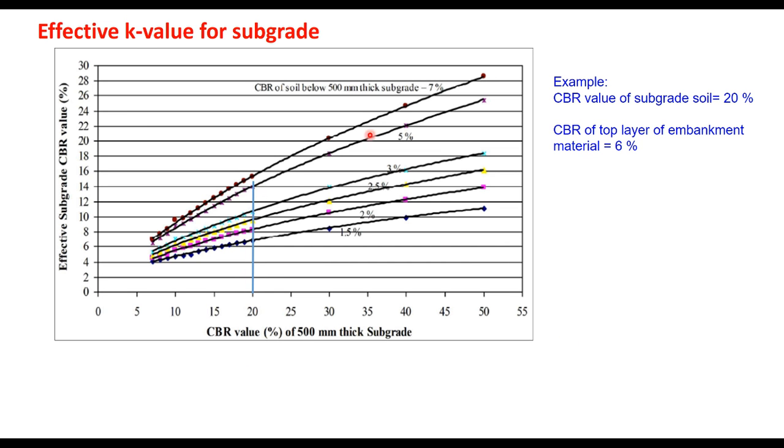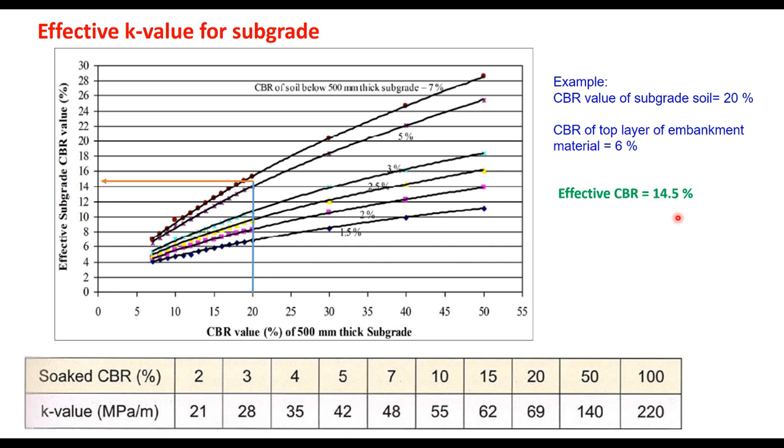Appropriately choose this curve for CBR of soil below 500 mm thick subgrade. In this example case it is 6 percent, so we take between 5 and 7. From this you move horizontally and read the effective subgrade CBR value, that is 14.5 percent.